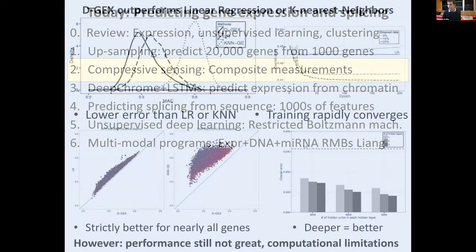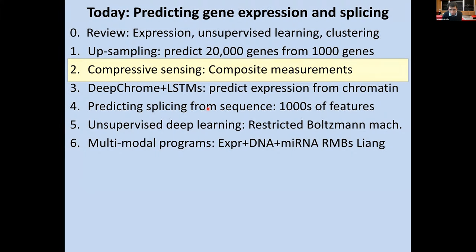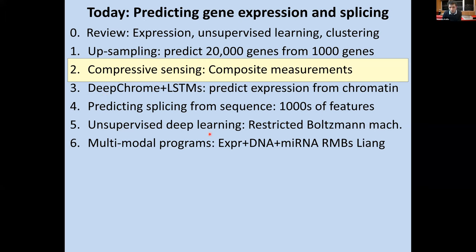Let me pause for questions. How do I interpret an error of 0.3? This means the prediction is roughly 30% inaccurate — if you're asking what the actual value of that gene's expression was, you're off by a factor of 0.3.